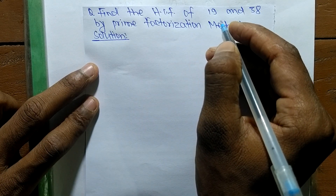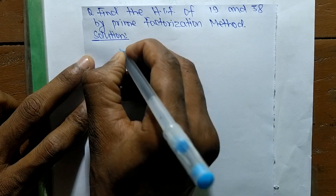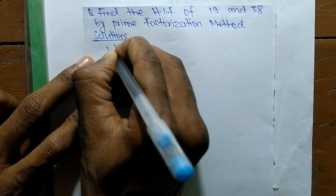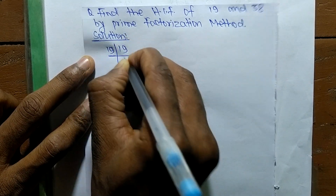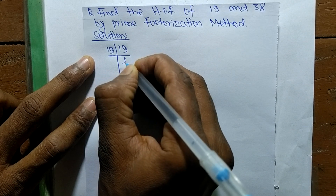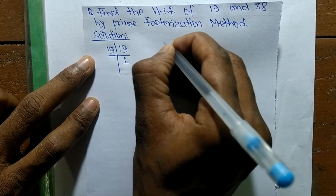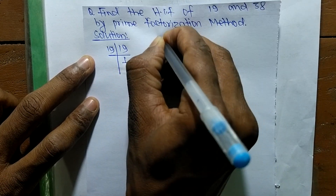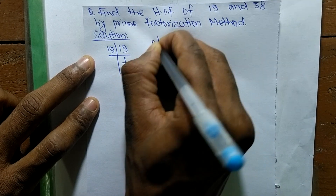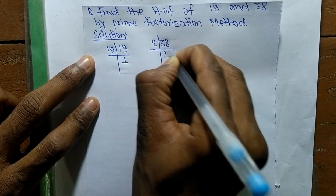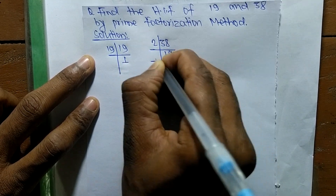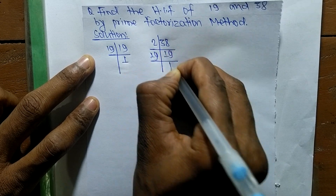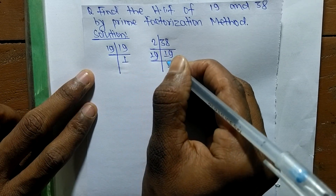First we find the prime factors of 19, which gives us 19 × 1 = 19. The prime factors of 38 are 2 × 19 = 38, and 19 × 1 = 19.